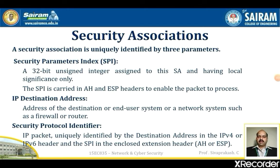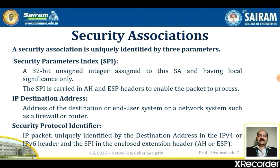A security association is uniquely identified by three parameters. First, the security parameter index (SPI) is a 32-bit unsigned integer assigned to this security association, having local significance only. This SPI is carried in AH and ESP headers to enable the receiving system to select the security association under which a received packet will be processed.